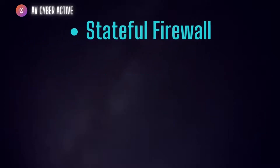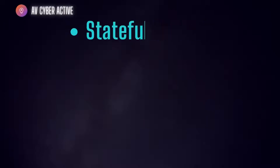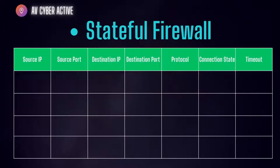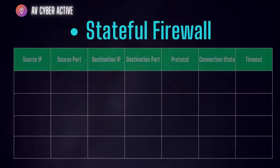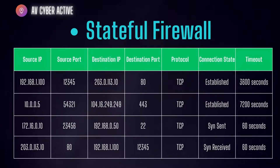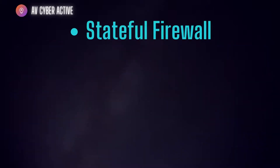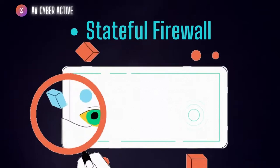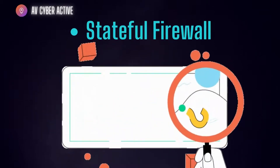First, let's take the stateful firewall. As the name suggests, these firewalls maintain a record or state of connections passing through them. They keep track of the context of each network packet, including the source IP, destination IP, ports, and connection status. Stateful firewalls use this context information to make more informed decisions about allowing or blocking network traffic.